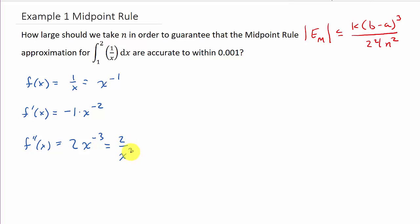That's 2x to the negative 3, and that equals 2 over x cubed. Alright, so there's my second derivative. So, we know, well, we can find k now. And what we know is we know that x is between 1 and 2.